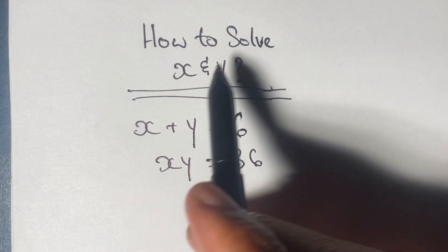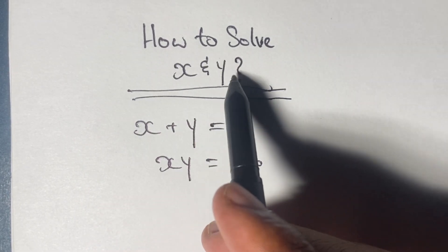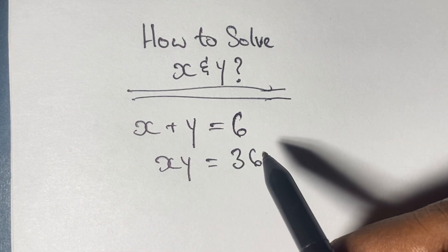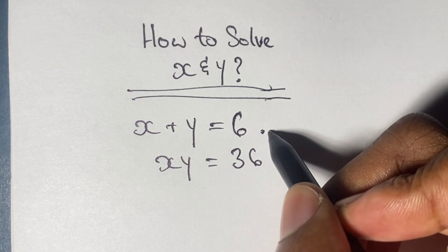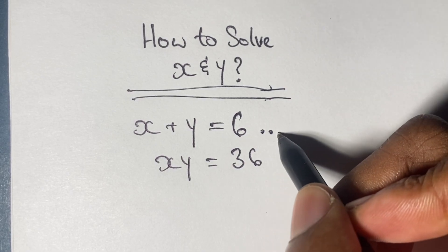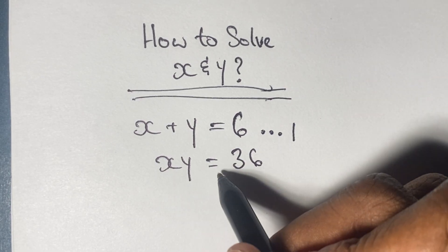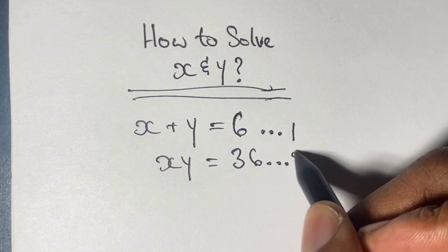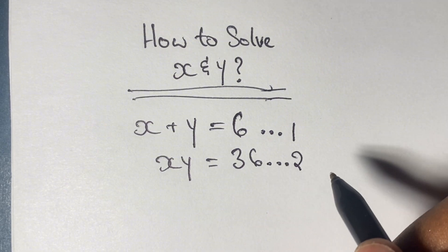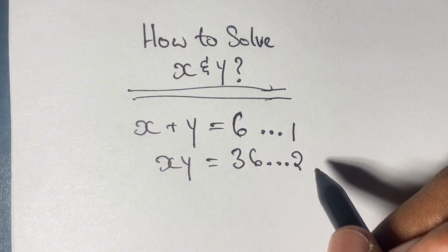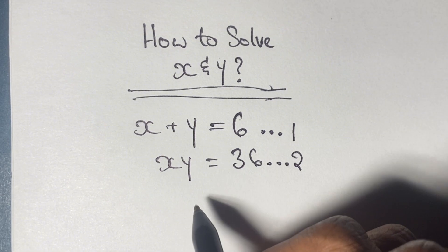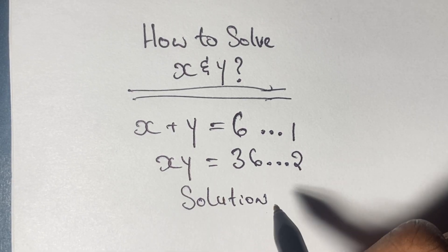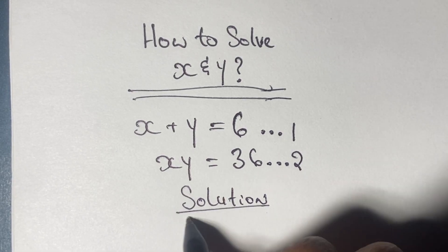Greetings again everyone. Welcome back to my channel. Here we have a pair of simultaneous equations that we are going to solve, where in equation one we have x plus y is equal to six, and in equation two we have x times y is equal to 36. By looking at both equations we can see that our solutions will be complex, so join me as I go through our solutions.